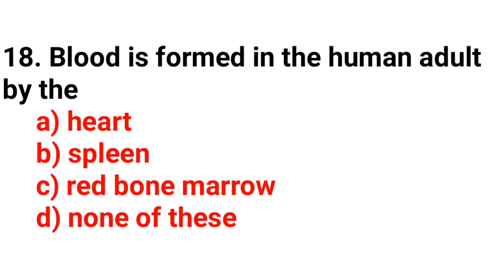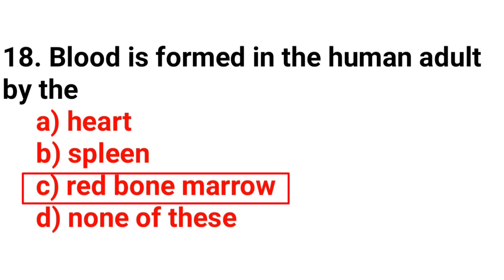Question number eighteen: Blood is formed in the human body by the — the answer is option C, red bone marrow.